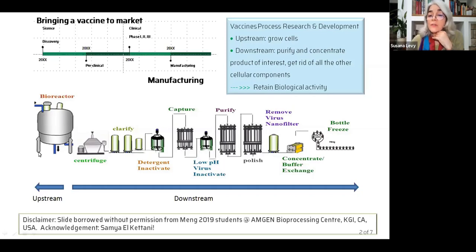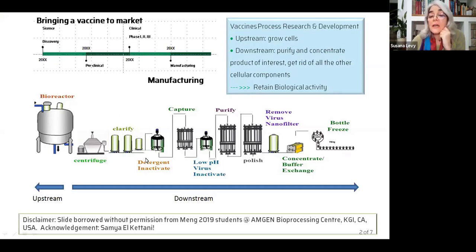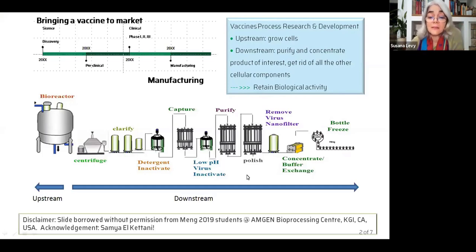So upstream: grow your cells. Downstream: get rid of all the cellular bacteria and things that you do not want in your product. You basically want to have your product 99.99% pure, but also very importantly you want to have your product with biological activity. And as in any process that has many steps, you are going to have losses of your product as you go along, and you obviously want to maximize yield.